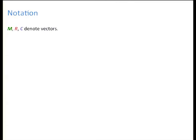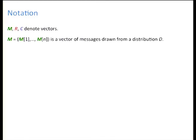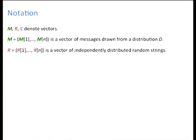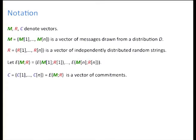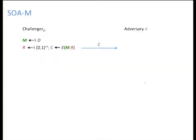Selective open attacks concern scenarios where there are many possibly related messages being committed to. We introduce some vector notation: M is the vector of messages, whose components may be related to each other; R is a vector of independent coins. We also use shorthand notation for the operation of committing to many messages element-wise — committing to the first message using the first coins and so on — and C is the resulting vector of commitments.